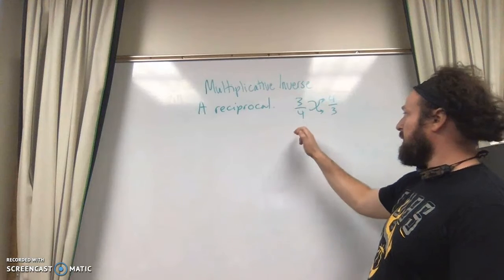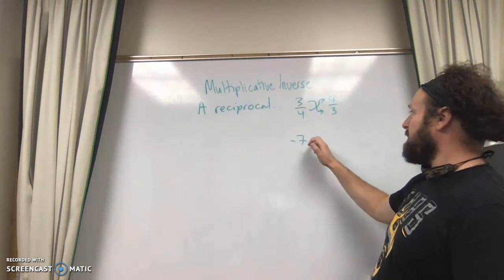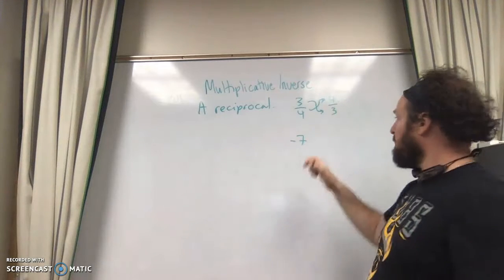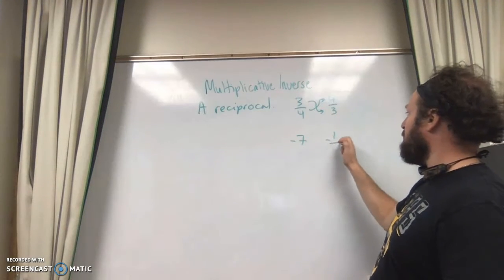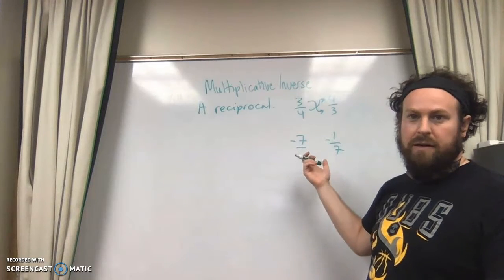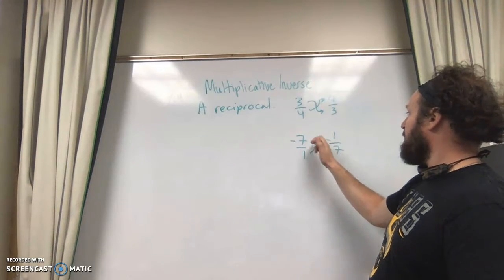Or if you had something like the number negative 7, and you rotate it, numerator and denominator, flip it over, and it becomes negative 1 over 7. Because the denominator of any integer would be just 1. They flip.